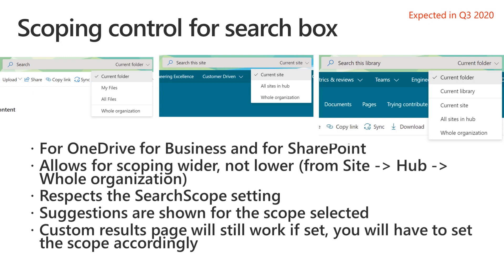This will be available in OneDrive for Business. It will show up on the left where you'll be able to scope searches to current folder, only my drive, or all files in the organization. There's also the whole organization affordance which lets you jump out into the enterprise search center in the SharePoint start page to search across all types — not just files but also list items, pages, sites, and connector information added as custom verticals.